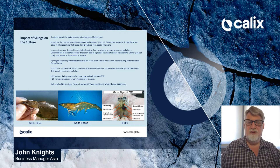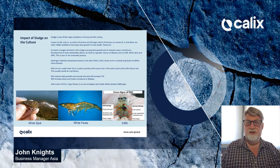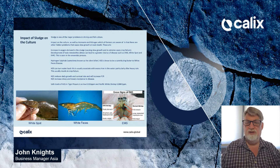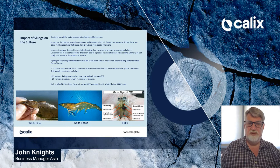Safe levels of hydrogen sulfide are very low, much lower than ammonia or nitrite. In the case of tiger prawns it's as low as 0.033 parts per million, and for white pacific shrimp 0.0087 parts per million. This is much, much lower than ammonia and nitrite.